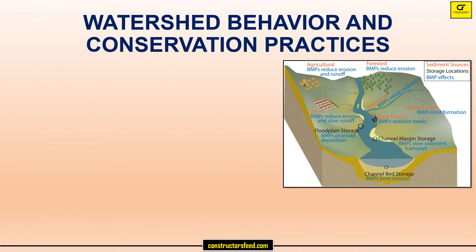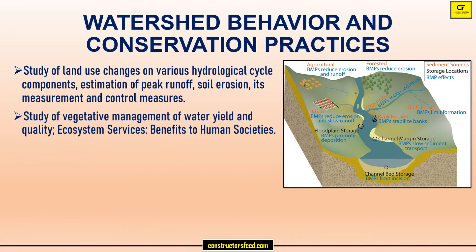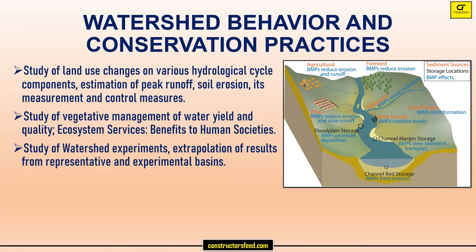Watershed behavior and conservation practices: study of land use changes on various hydrological cycle components, estimation of peak runoff, soil erosion, its measurement and control measures. Study of vegetative management of water yield and quality, ecosystem services and benefits to human societies. Study of watershed experiments and extrapolation of results from representative and experimental basins.